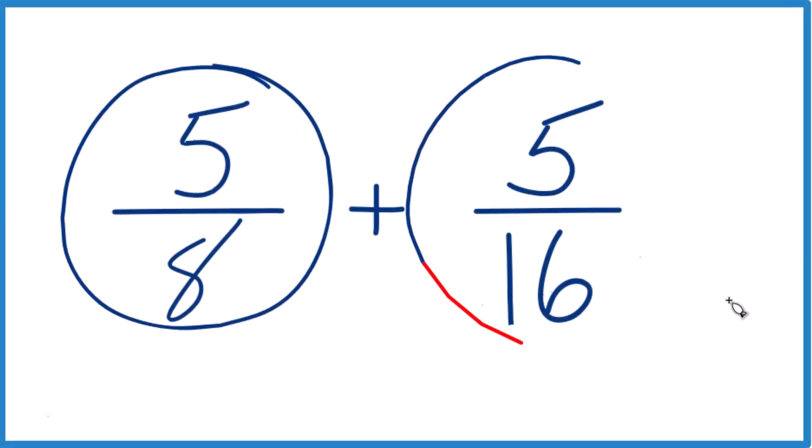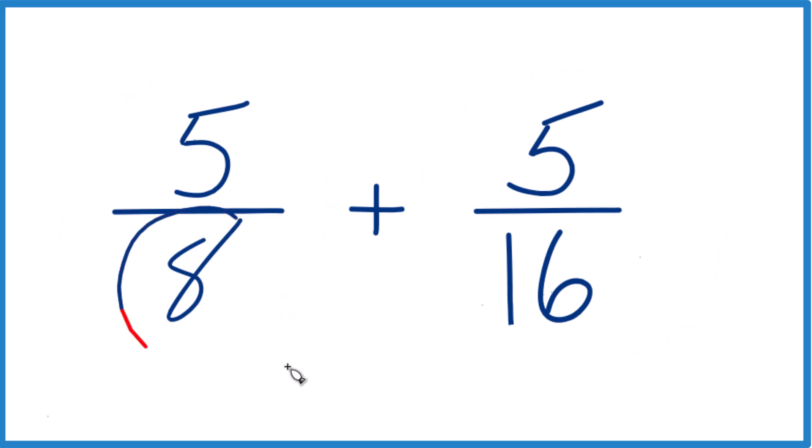Let's add 5 eighths and 5 sixteenths. Here's how you do it. What we want to do is get this denominator here to be the same. We want a common denominator because if these are the same, we add the numerators, bring the denominator across, and we're done.